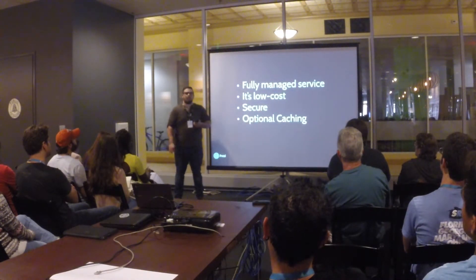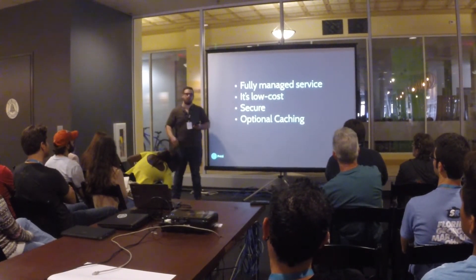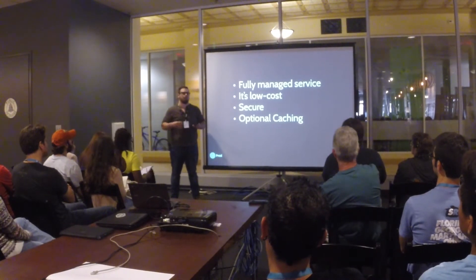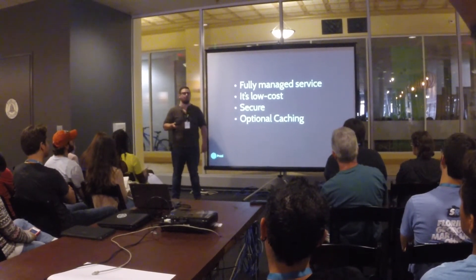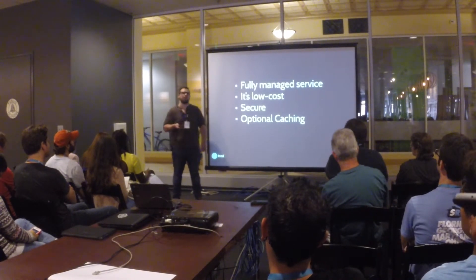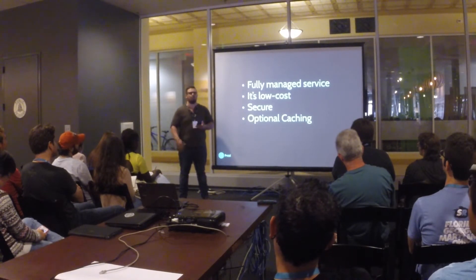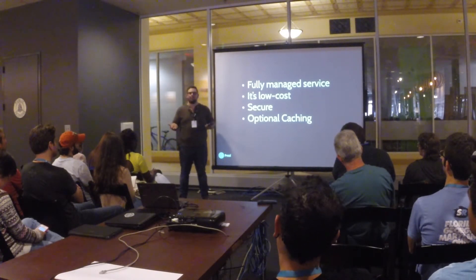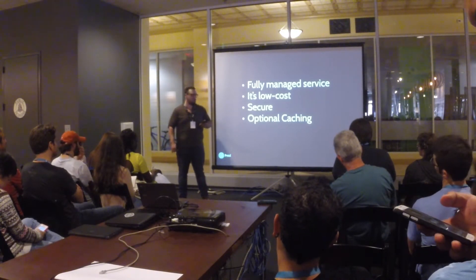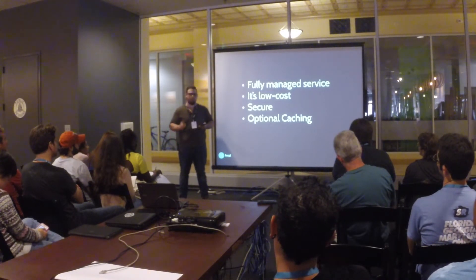If you haven't heard about Amazon API Gateway, it's a fully managed API service. It allows you to build your own APIs through their interface. It's low cost — $3.50 per million requests, and then about two cents per gig of data transfer. It's secure — you can configure it with any sorts of authorization. And you have optional caching, which works ridiculously well.